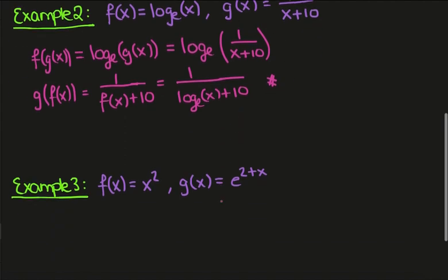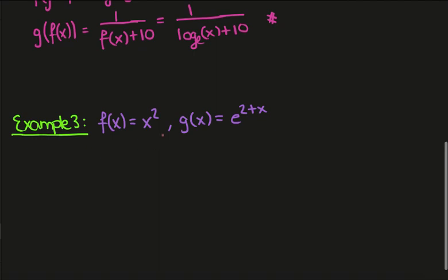Okay the last example here we have f of x is equal to x squared and g of x is equal to e to the 2 plus x so we'll have f of g of x. That's simply replacing x in the definition of f with g of x so we'll have g of x squared.